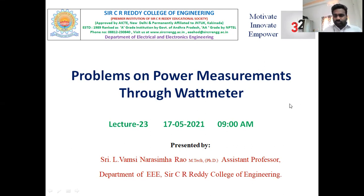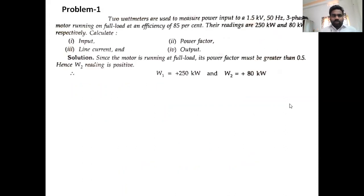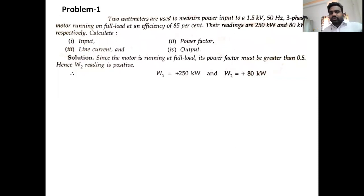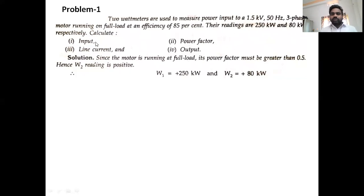First problem: two-wattmeter method. Two wattmeters measure the power input of a three-phase motor running at a line voltage of 1.5 kV and frequency of 50 Hz, at full-load efficiency of 85%. The readings of the two wattmeters are W1 = 250 kW and W2 = 80 kW. We need to calculate: input power, power factor, line current, and output power.